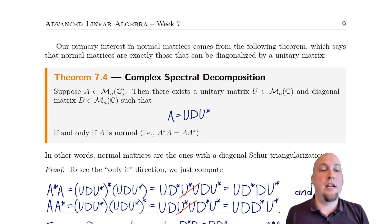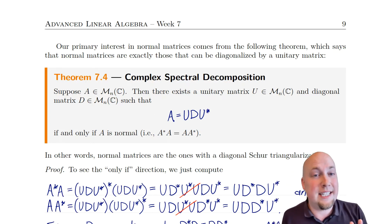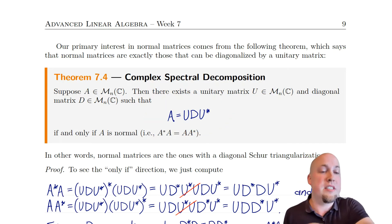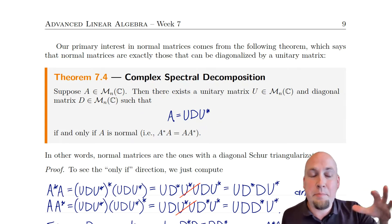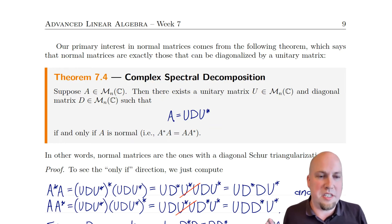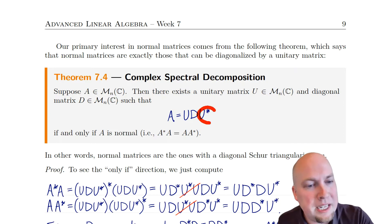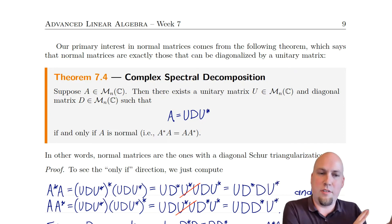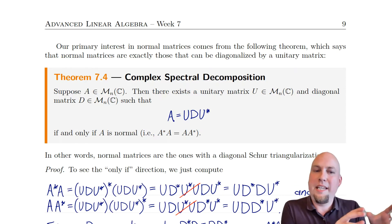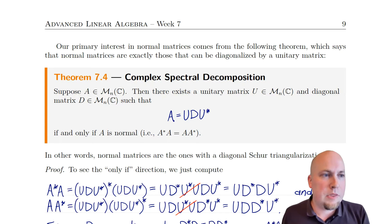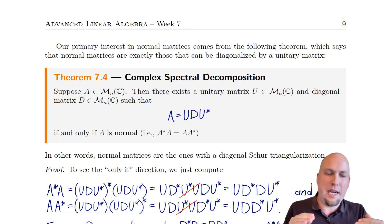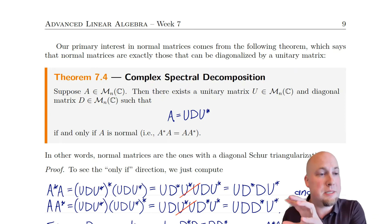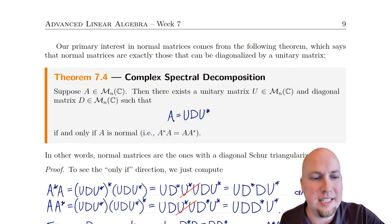Instead, the way to think about the complex spectral decomposition is to notice it's a special case of diagonalization. Back in introductory linear algebra, we wrote a matrix as A = PDP⁻¹. The only difference now is that the invertible matrix P is replaced by a unitary matrix U. So we're going to do all the same things we did to compute diagonalizations, except we take the minor extra care needed to ensure the invertible matrix P is actually unitary.